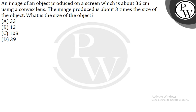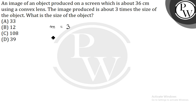An object is produced on a screen, and the image is 36 centimeters using a convex lens. The image is about three times the size of the object, so we need to find the size of the object. Magnification equals three, and the height of the image is given as 36 centimeters, so we have to find the height of the object.